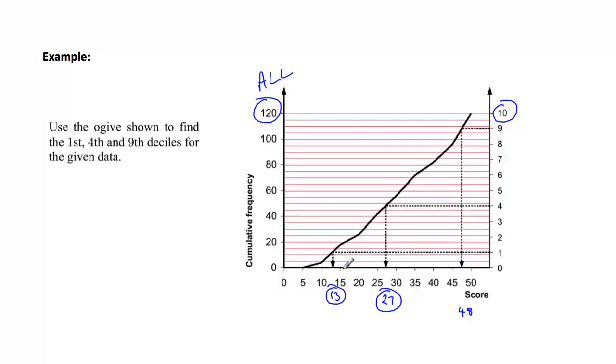Now if this was drawn to scale, you could actually see what those are but because it's not I'm giving those to you but it just simply means that in this case 90% of the scores are below 48 and the other 10% are above. So that's the concept of the deciles.